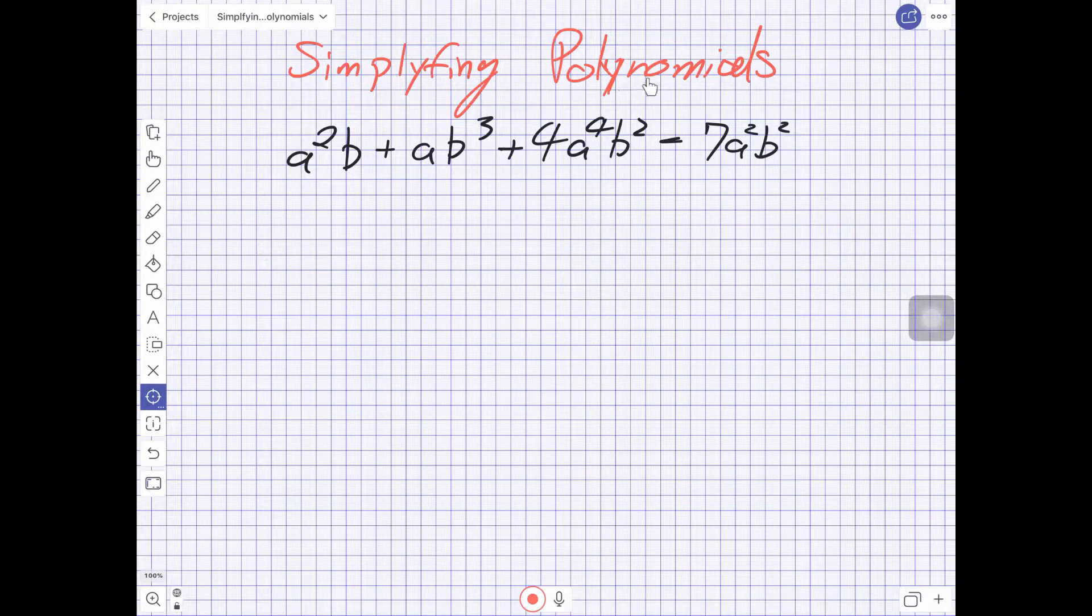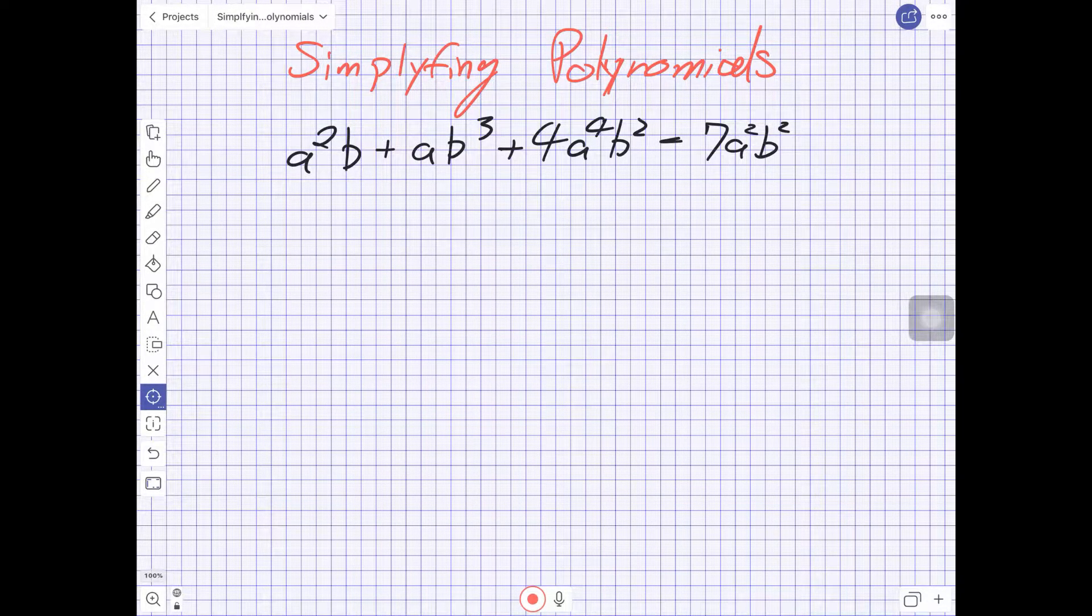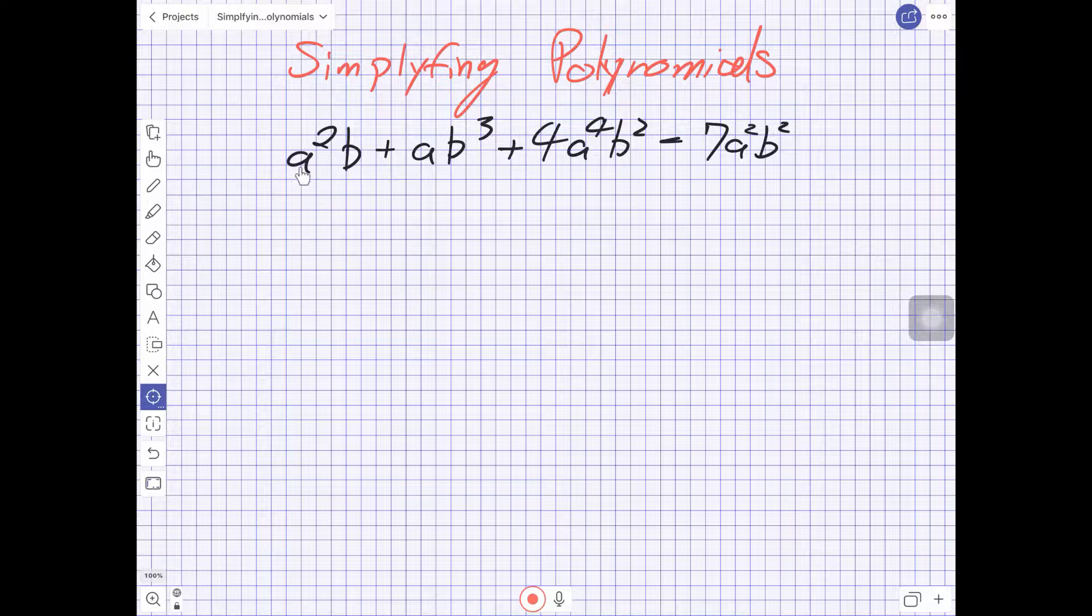We're going to look at this is called simplifying polynomials. A polynomial is a term in mathematics and has different variables attached to it. So we have the letter A and B, these are known as variables.